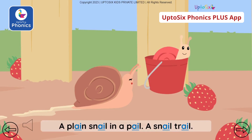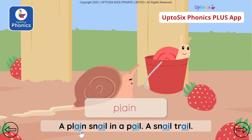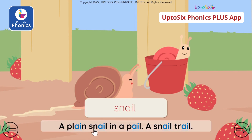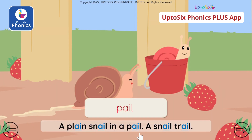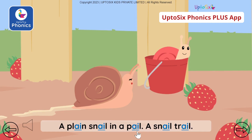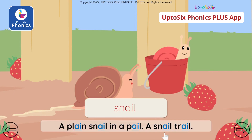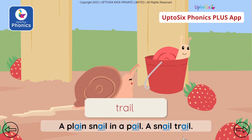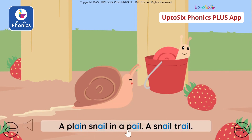Let's read. A plane. Plane — 'ai' is a digraph. A snail in a pale. The digraphs are underlined and marked with blue colors so that you can identify them. A snail trail.